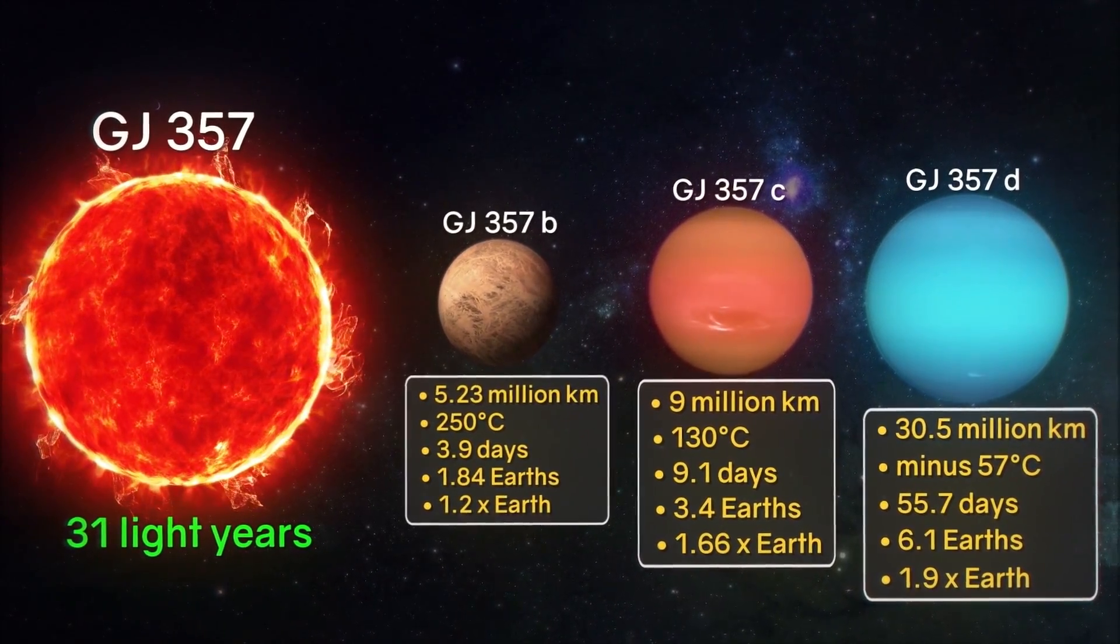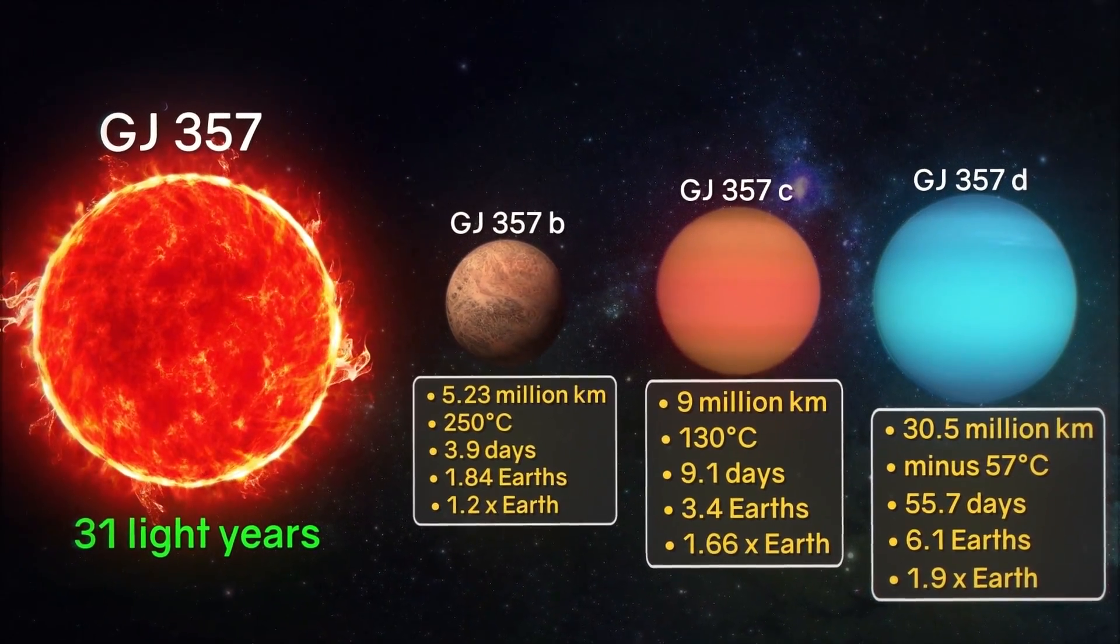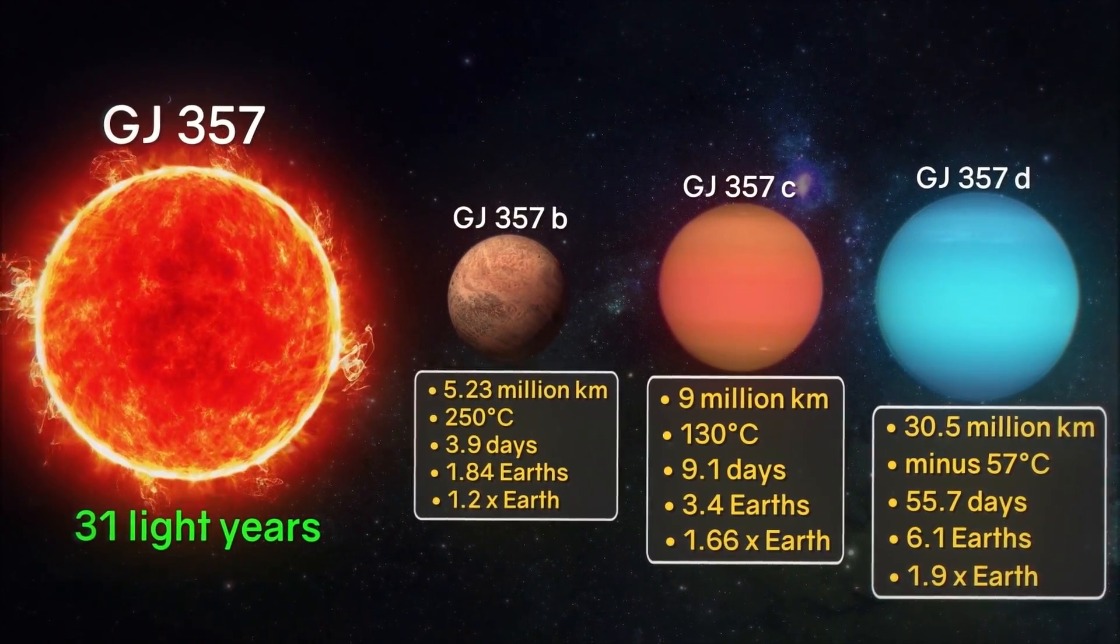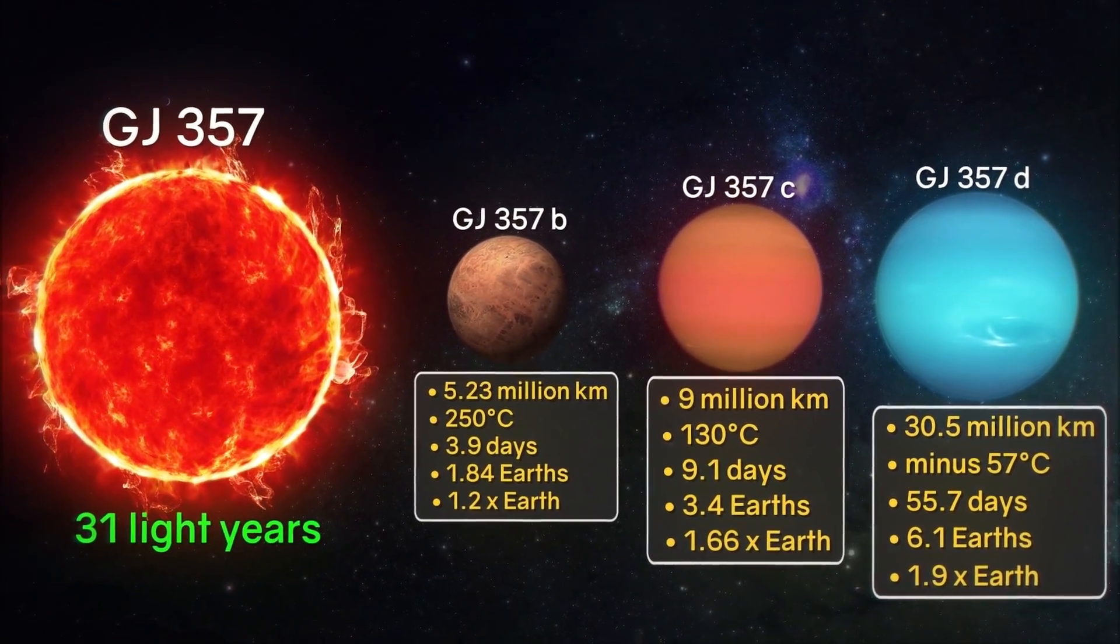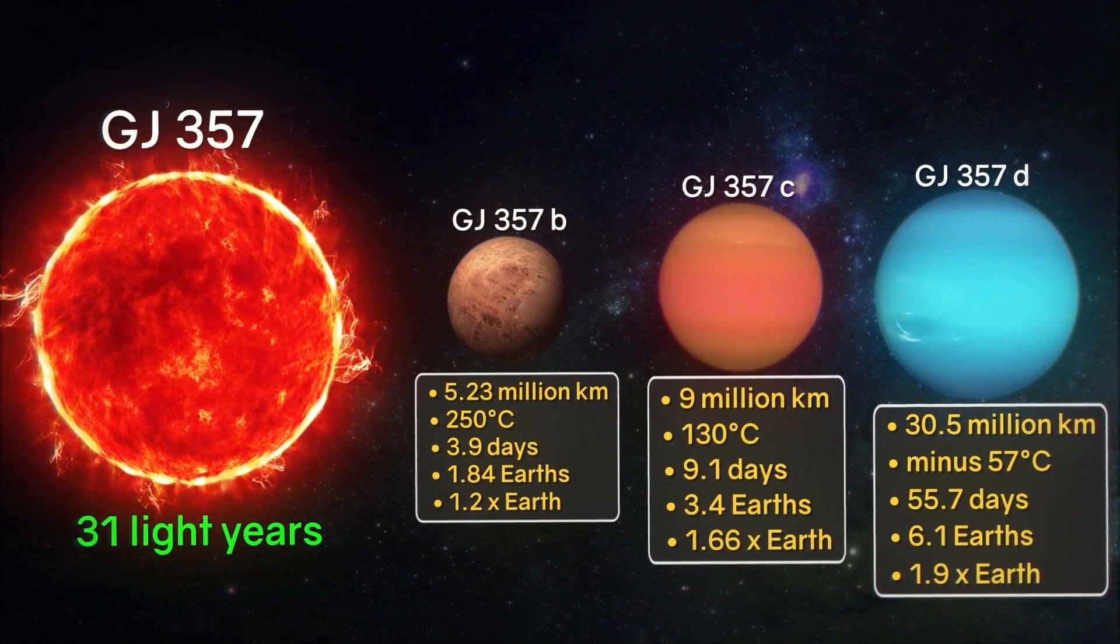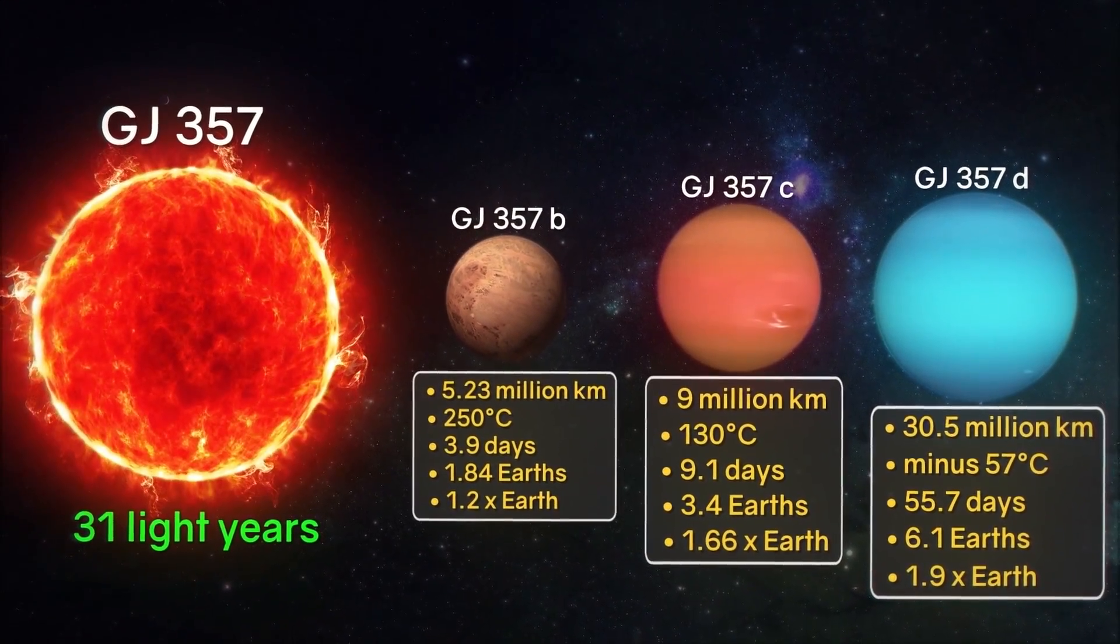At first glance, given such low temperatures, it appears that GJ357d is uninhabited, but scientists do not lose hope. They believe that if there is a dense layer of atmosphere around the planet, the presence of which should be established in the course of future research, enough heat should linger on it to warm the planet and to have liquid water on its surface.